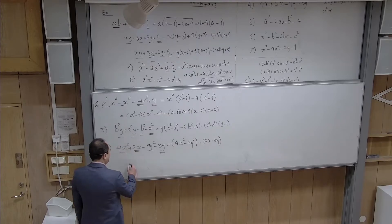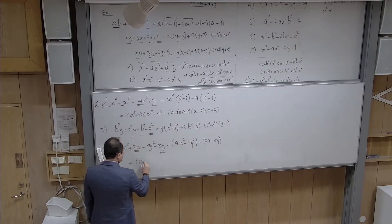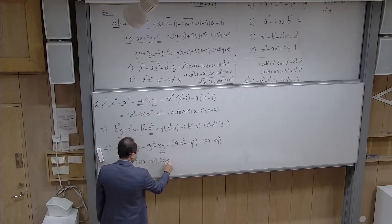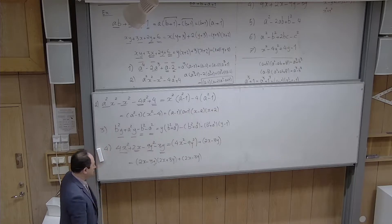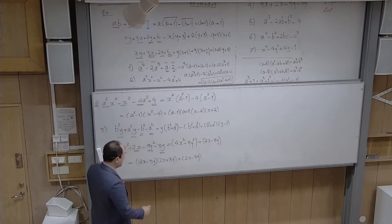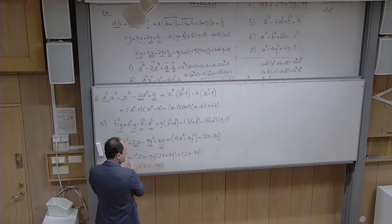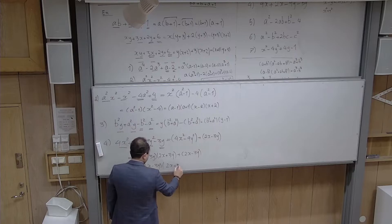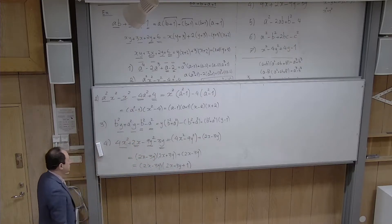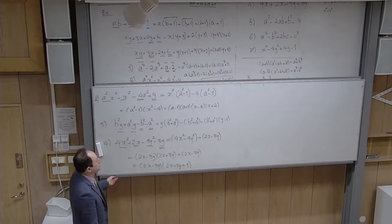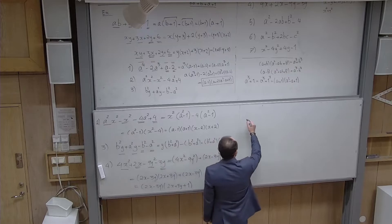One more example: factorize 6t² − 5t + 1 using both methods. Longer method: set equal to 0, t = (5 ± √(25 − 24)) / 12 = (5 ± 1) / 12. So t₁ = 1/2 and t₂ = 1/3. Using the formula: 6(t − 1/2)(t − 1/3). To clear fractions, write 6 = 2 × 3 and distribute: multiply 2 into the first bracket and 3 into the second, giving (2t − 1)(3t − 1).